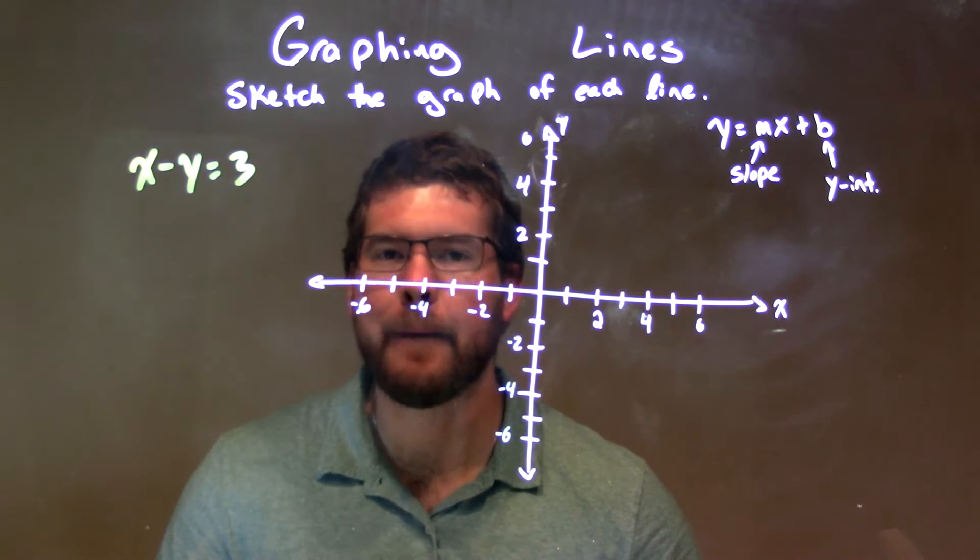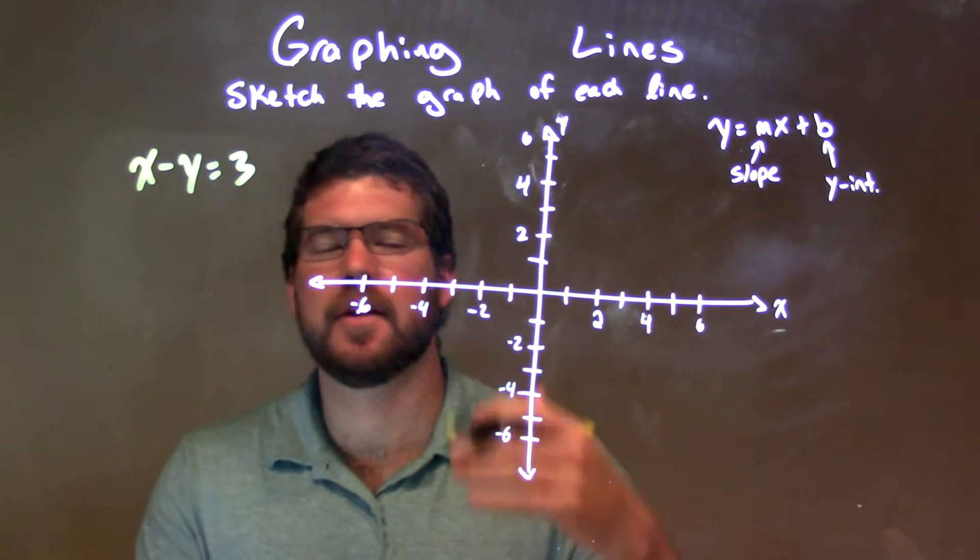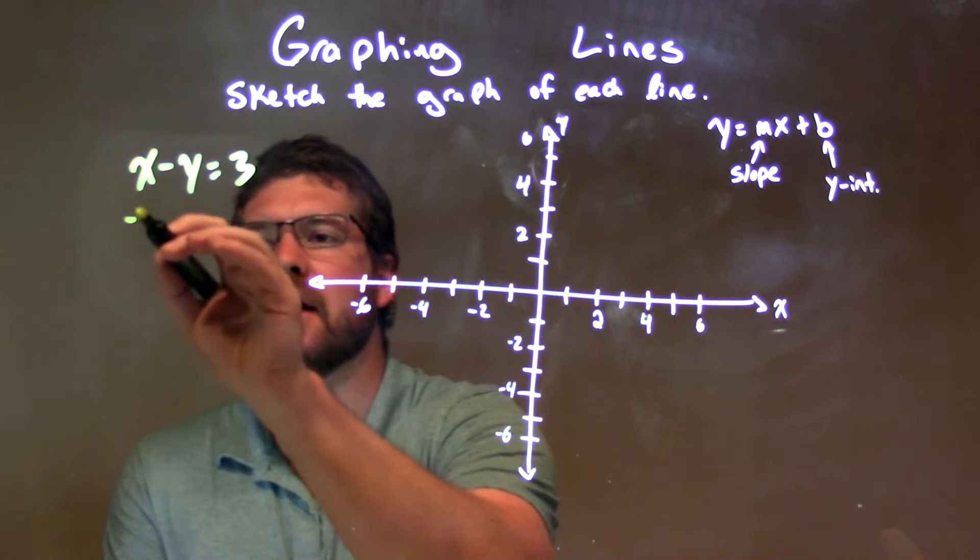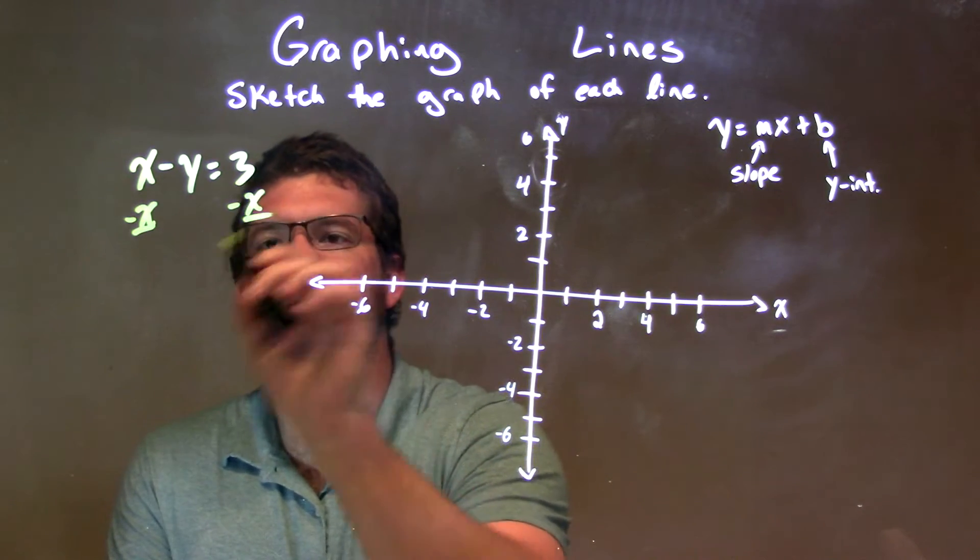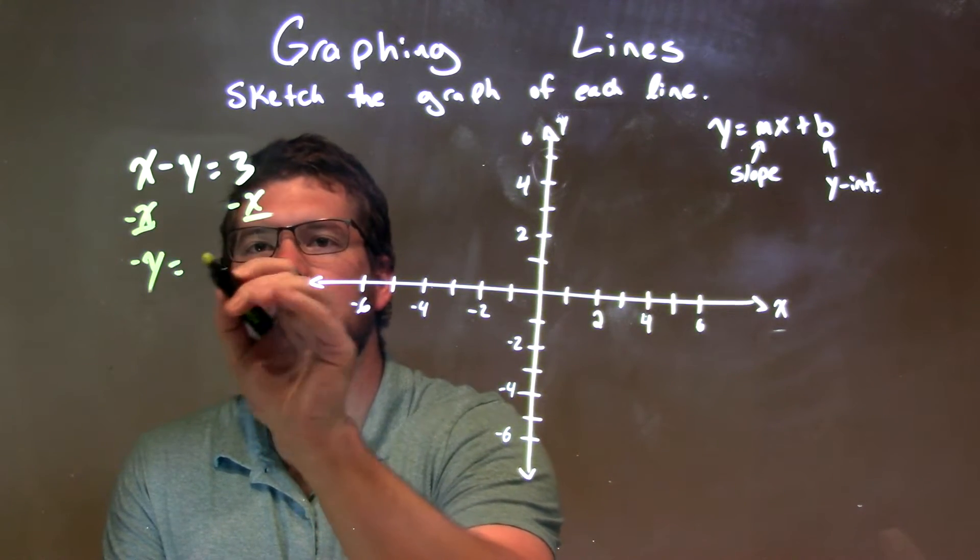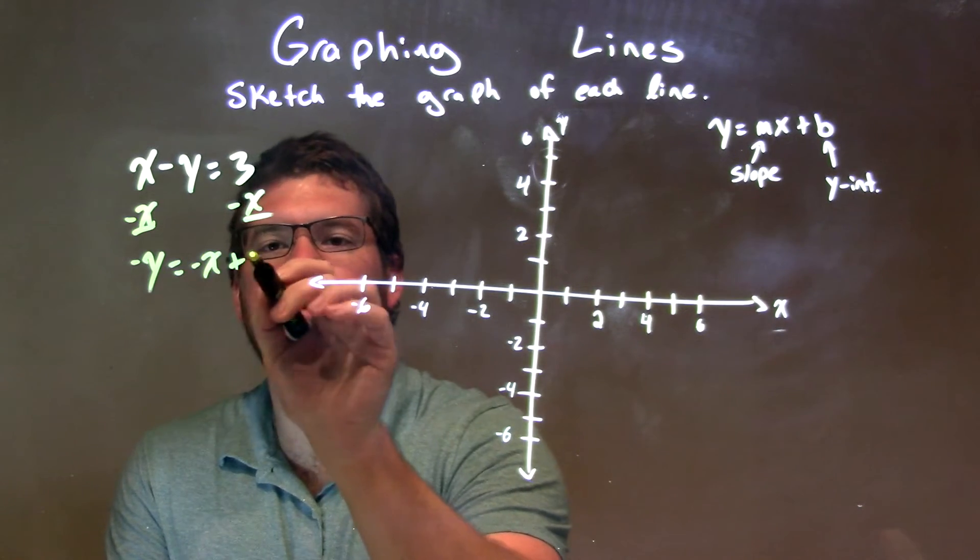The goal here is to get y by itself to get in slope-intercept form. I subtract an x here to both sides. I have negative y equals negative x plus 3.